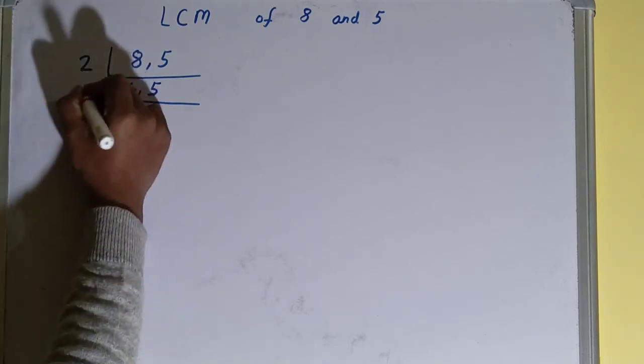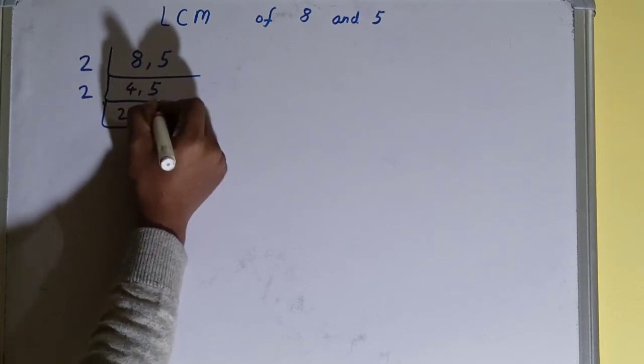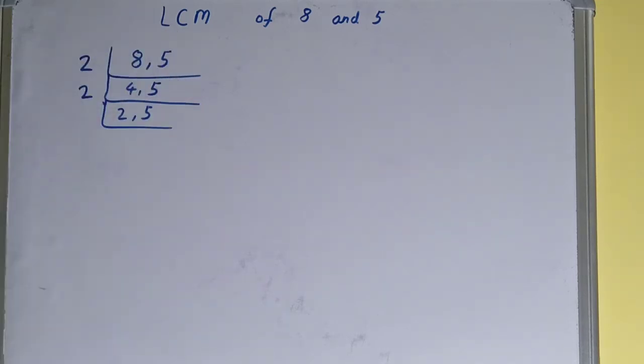But the other number will remain the same. Again we'll check if any of the numbers is divisible by 2. The first number is, so we'll divide and this will become 1. The other number will remain the same.